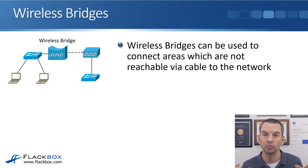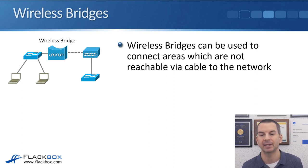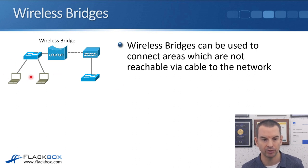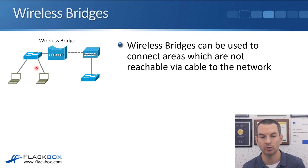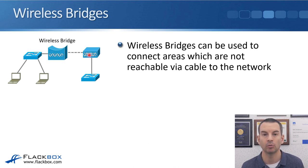Wireless bridges can be used to connect areas that are not reachable via cable to the network. For example, a warehouse where it's not possible to run a wired connection from the main building could use a wireless bridge to get connectivity, with a wireless connection going over to the main building. Wireless bridges are often used to provide connectivity between buildings where a cable is not possible.